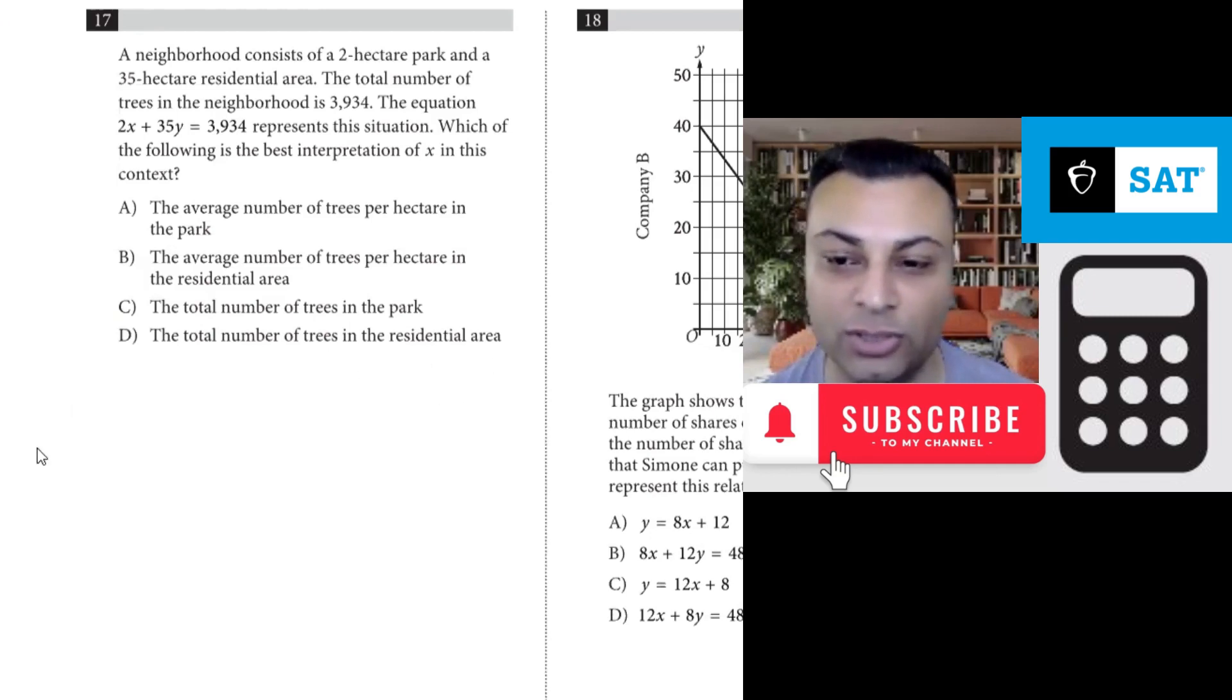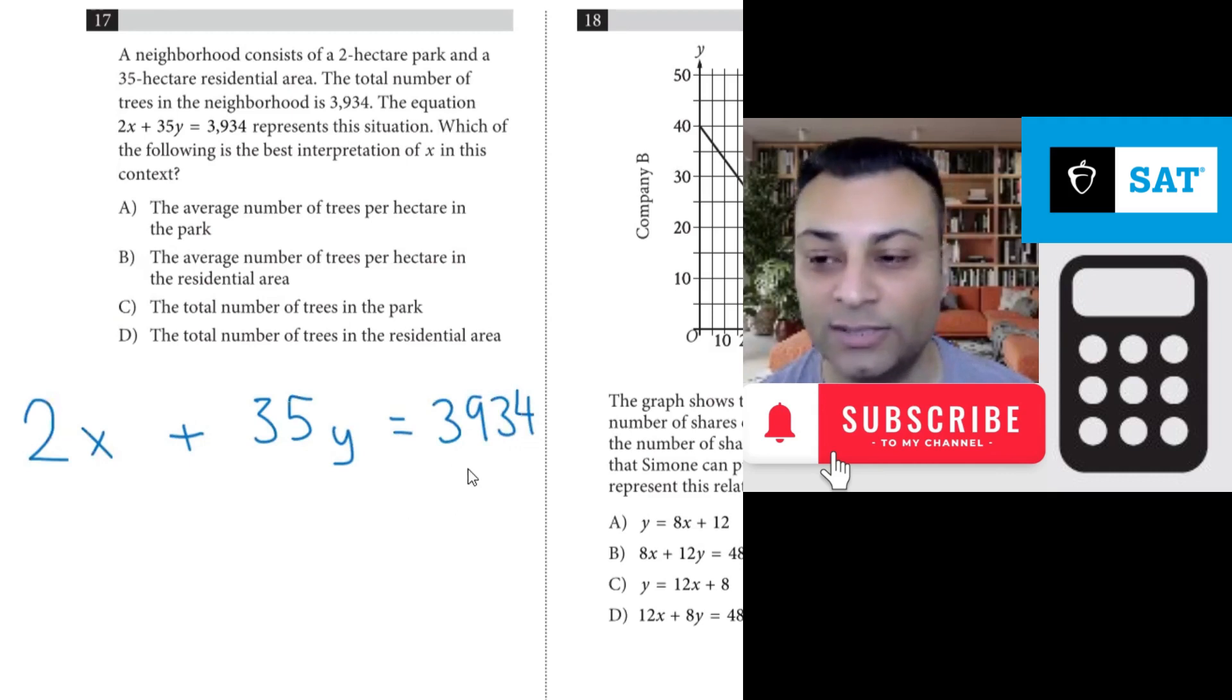Now there is a way to do this where you just look at everything very closely. So 2x plus 35y equals 3,934. What we want to do is make sure that the units are all consistent. This particular item here has a unit of trees or tree. So all these had better have the same units. Let's look at what the 2 stands for.